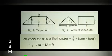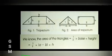Also, we know the area of the triangle is equal to half into base into height, which is equal to half into (a minus b) into height.